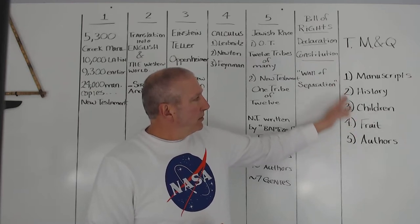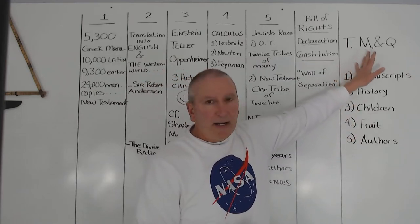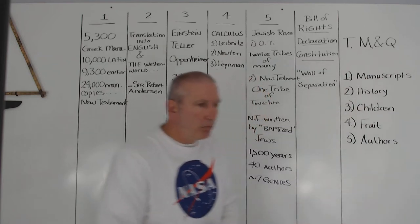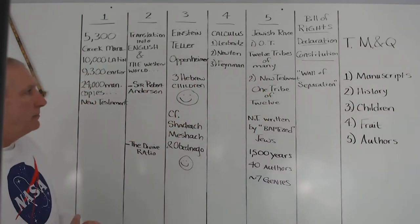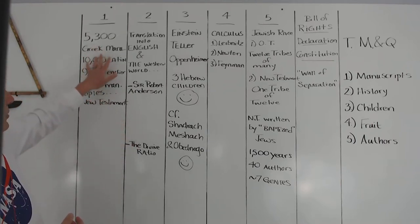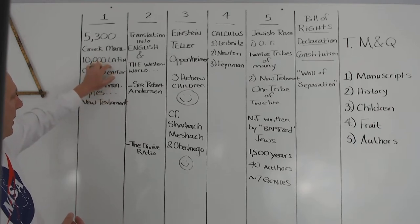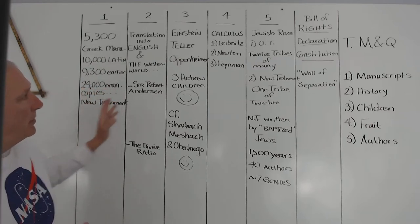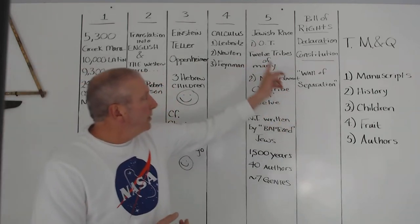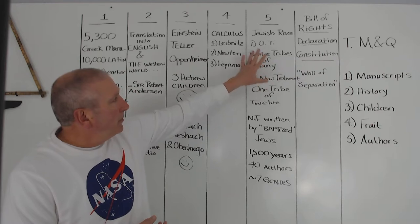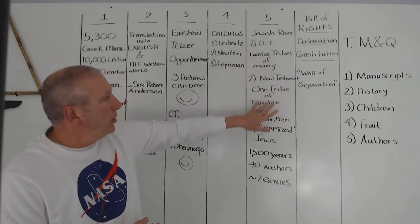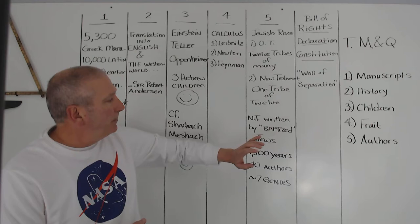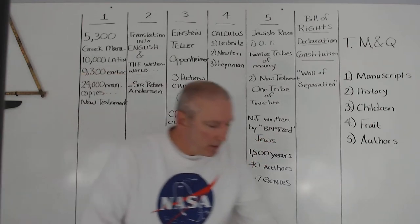So what we're going to do is I've built these five categories. These are the quantified steps. We'll just move into it very quickly and look at the manuscripts. For example, there's 5,300 Greek manuscripts, 10,000 Latin, 9,300 earlier forms of that. There's 24,000 manuscript copies just of the New Testament. Remember the Bible is written, the authors here, Jewish people. There were 12 tribes in the Old Testament. There's one tribe of 12 in the New Testament.